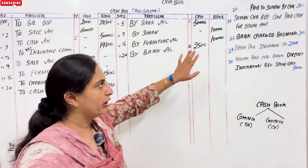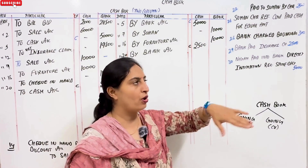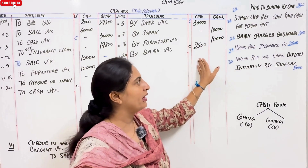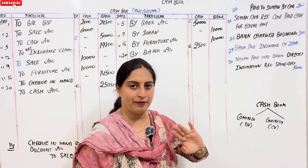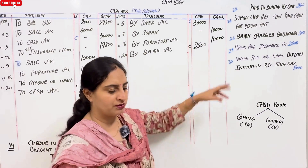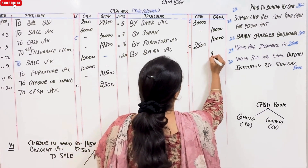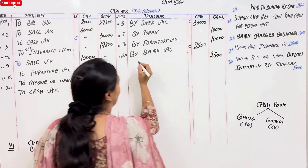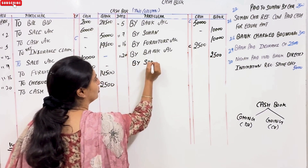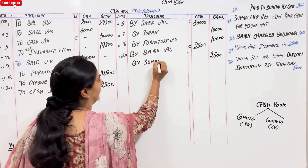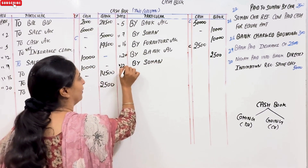Next is April 22nd — paid to Sohan. 'Paid' means cash is going — so it is a credit side entry. But payment was made by cheque, so it goes in the bank column. We put the amount of 25,500. And we write 'by Sohan' — Sohan has been paid by cheque. The date is 22nd.